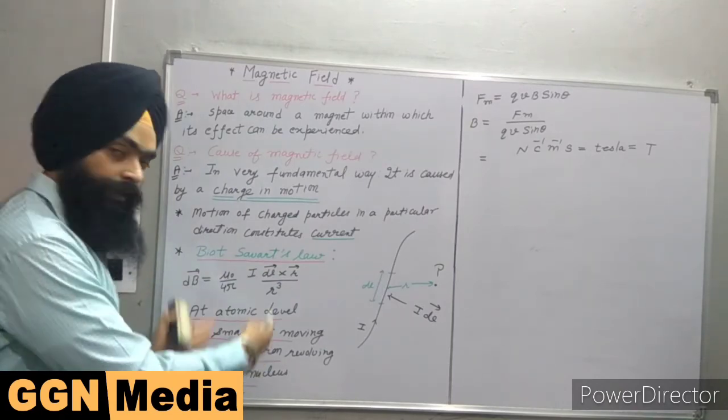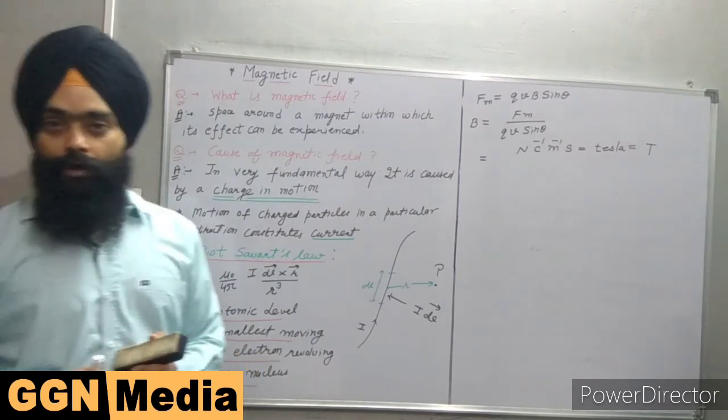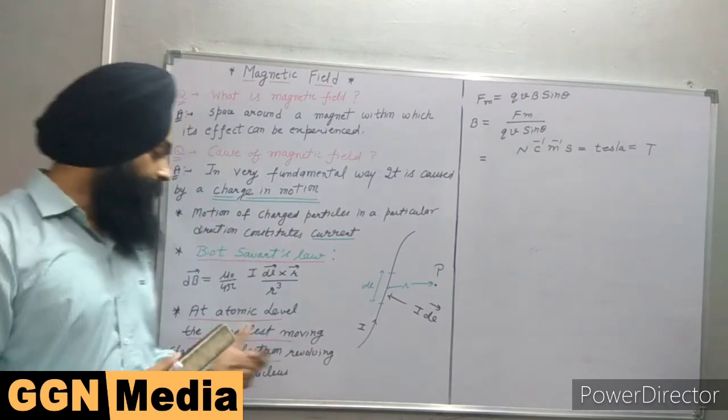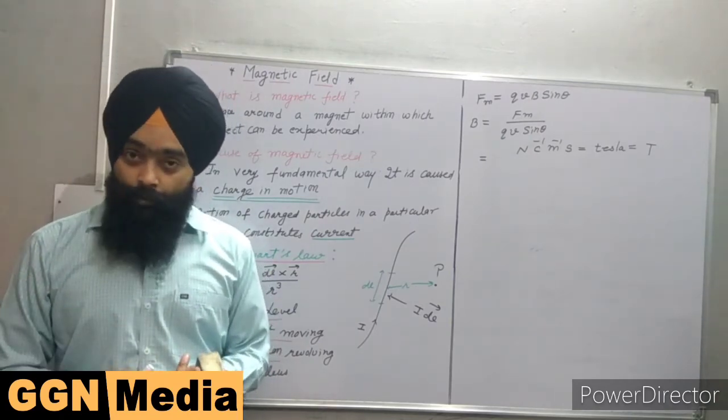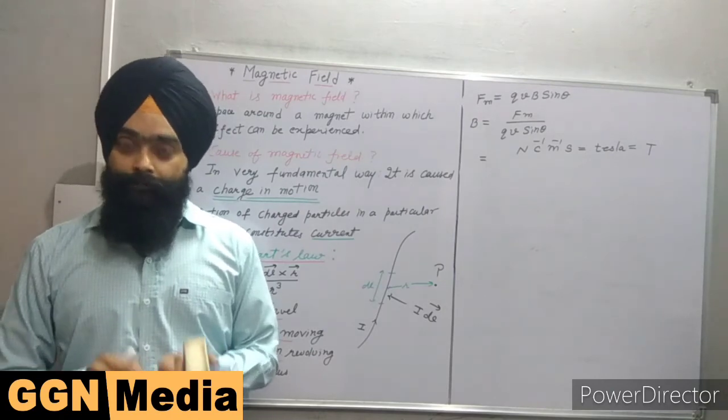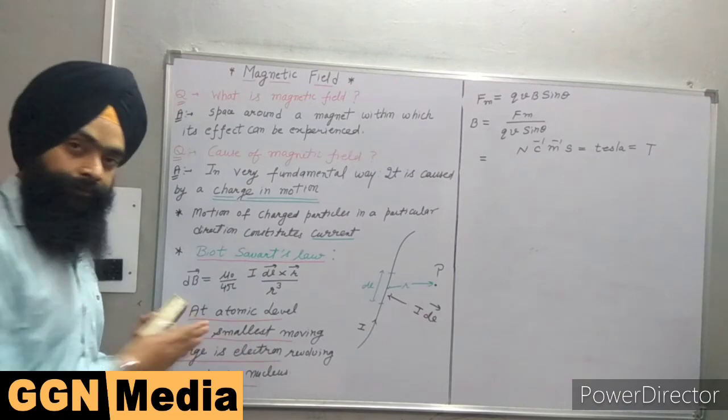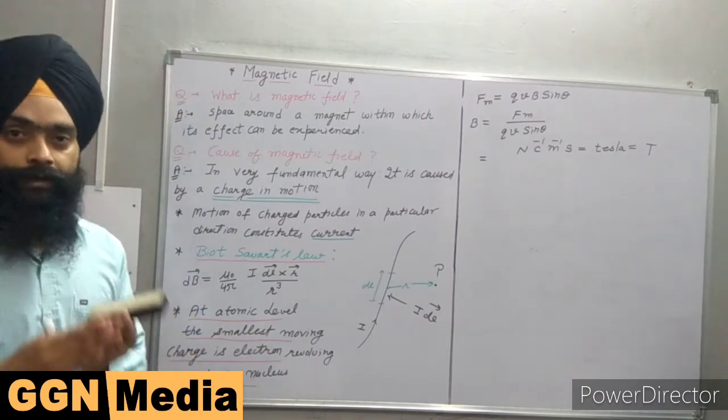And this portion is very much responsible for the magnetic characteristics of the elements. Due to this portion, we will explain diamagnetic properties, paramagnetic properties as well as ferromagnetic properties. So keep in mind that the smallest current at the atomic level is the electron revolving around the nucleus.